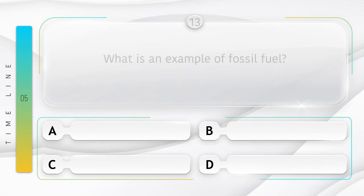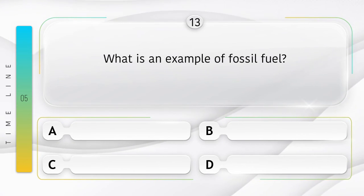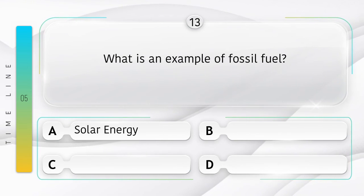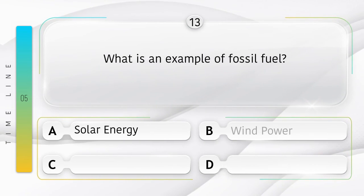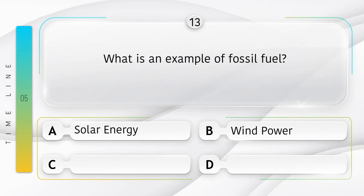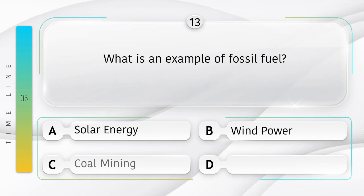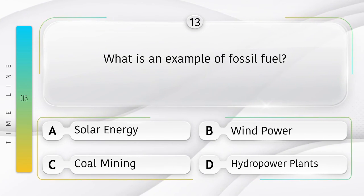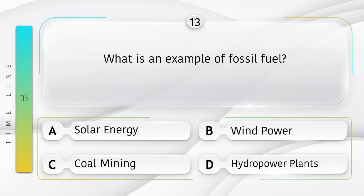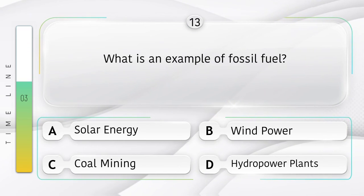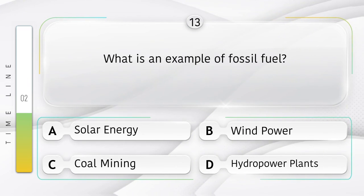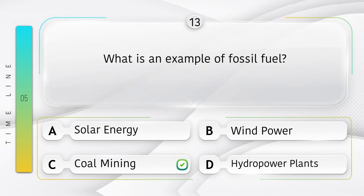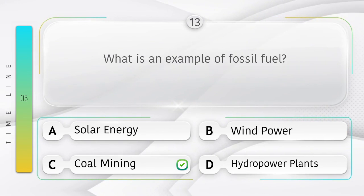What is an example of a fossil fuel? Option A: solar energy. Option B: wind power. Option C: coal mining. Option D: hydropower plants. Answer is option C: coal mining.